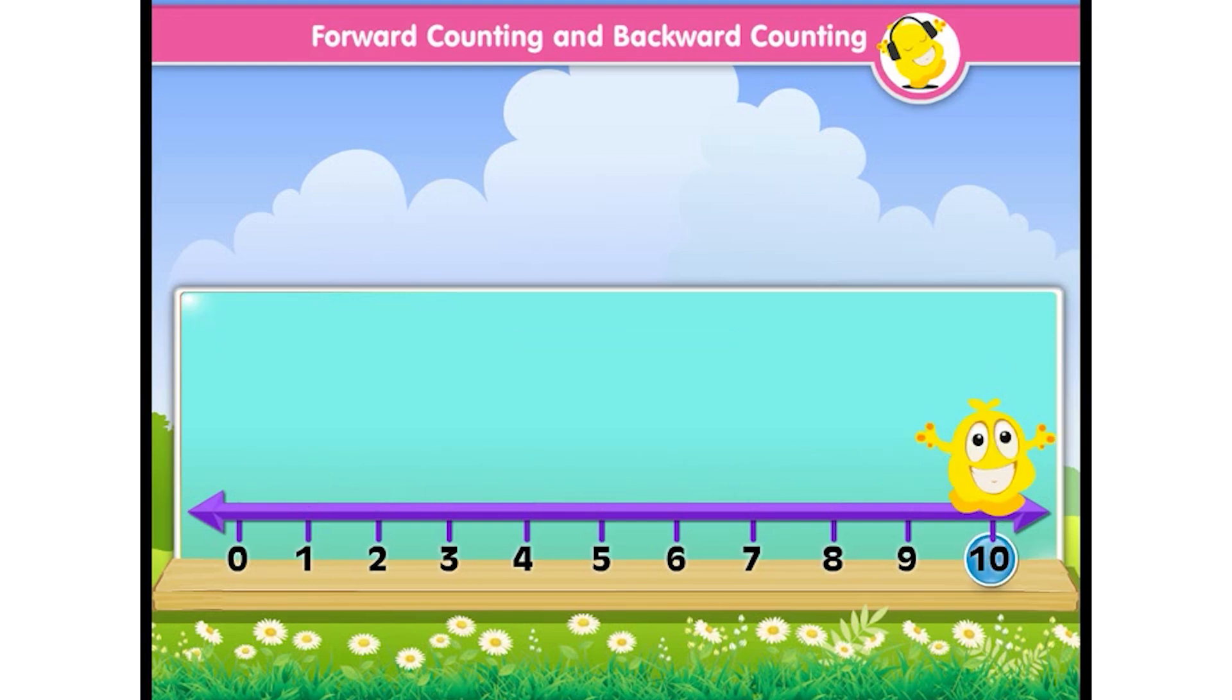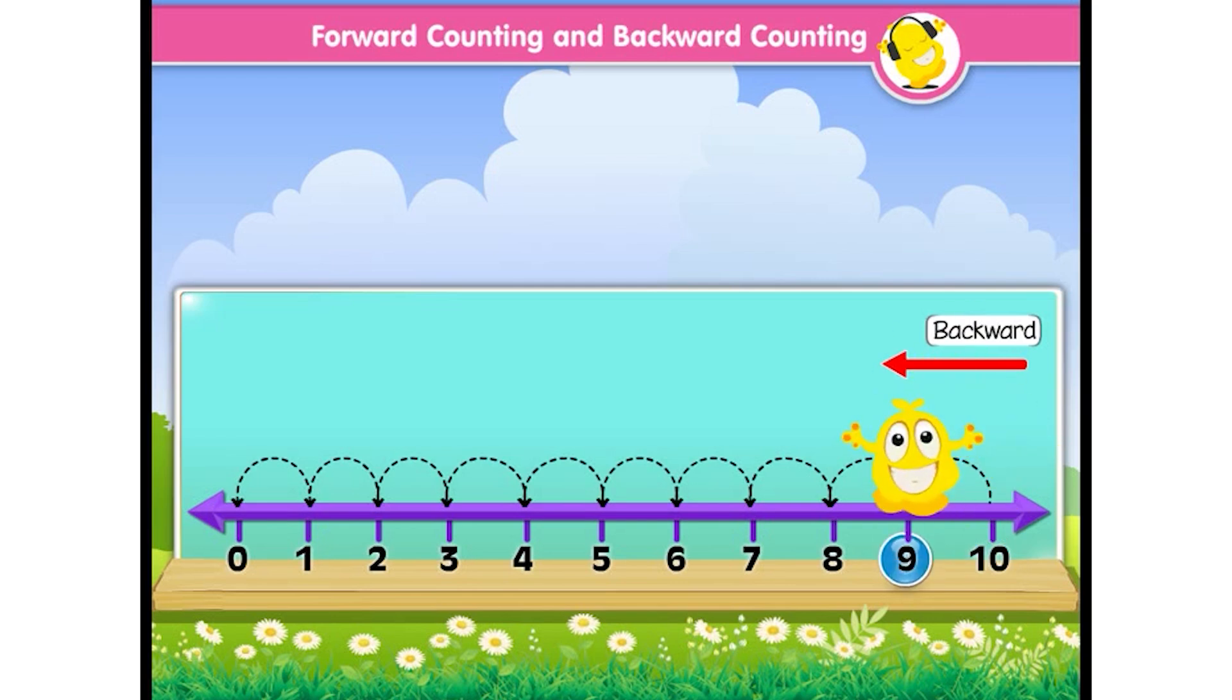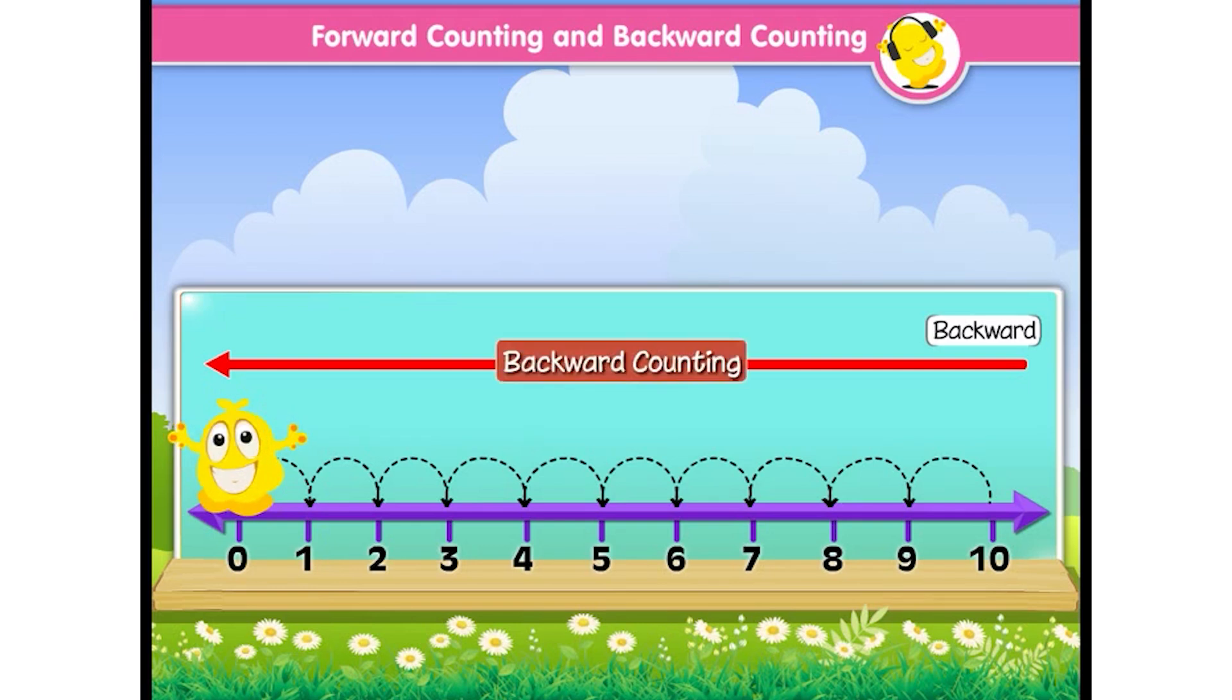Now Popcorn is on number ten. He wants to go back to number zero. How would he go? He will jump backward and go like ten, nine, eight, seven, six, five, four, three, two, one, zero.